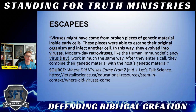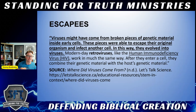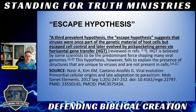From the literature: 'Viruses might have come from broken pieces of genetic material inside early cells. These pieces were able to escape their original organism and enter another cell, in this way evolving into viruses.' Just think cells — cells that God designed. A single cell is more complex than the space shuttle. We have 50 to 100 trillion cells. The genetic material of modern retroviruses like HIV works in the same way — after entering a cell, they combine their genetic material with the host's. This is confirmation of the biblical model.